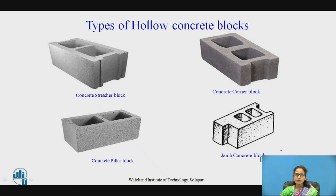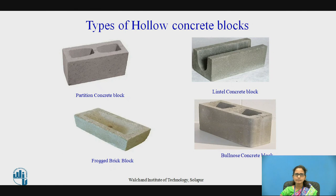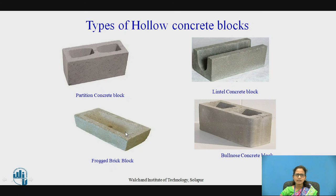Next is the jammed concrete block. It is used where stretcher blocks and corner blocks are widely used over elaborate window openings, and this type of block can be used there. Next is the partition concrete block — used for partition walls. Next is the lintel concrete block — used for the construction of lintels, i.e., over the openings of doors and windows. Next is the frogged brick block — a frog-type groove is made on the top of the block, where mortar is filled to increase the bond. They can be used for partition walls, window openings, and similar construction.